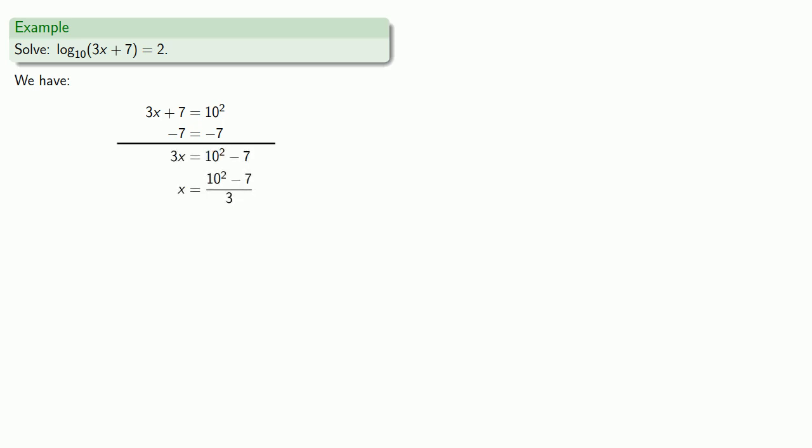As with other types of equations, we'll want to check our solution. And again, it's useful not to simplify our arithmetic expression. So we'll check by dropping this value into our original equation. And remember the log is the exponent. So the log to base 10 of 10 to the second is in fact equal to 2. So our statement is true. And so x equals 10 to the second minus 7 over 3 is a solution.